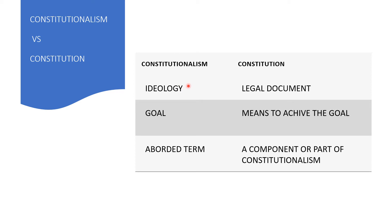Whereas Constitutionalism is an ideology which explains the way of life, values, goals, and ideas of the people and the nation. Matlab ki, Constitutionalism jo hai wo ek goal hai jo hain achieve karna hai. Jabki Constitution hai, us goal ko achieve karne ka ek tariqa hai.